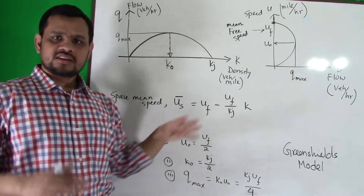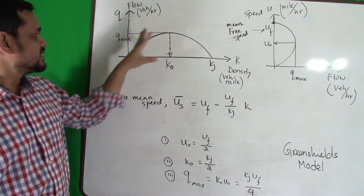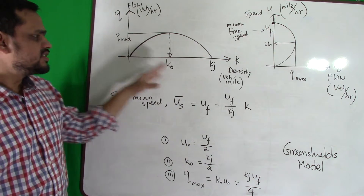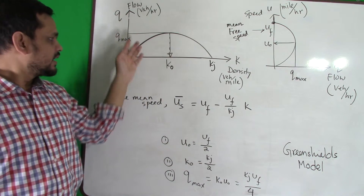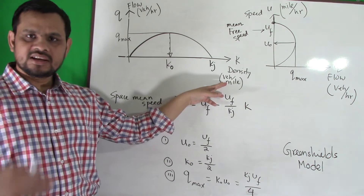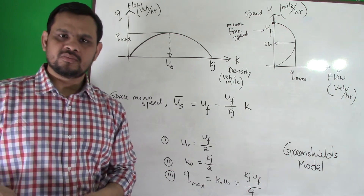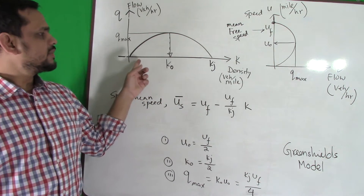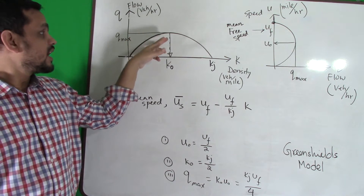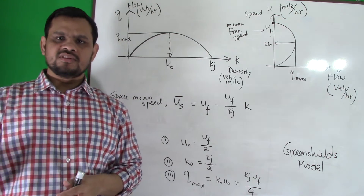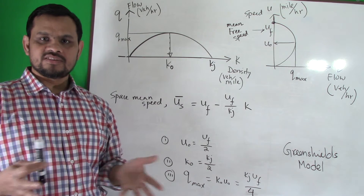In flow versus density, the typical relationship on our highway is: when density is zero, there are no vehicles on the road and no flow. If the number of vehicles increases, flow increases — more traffic means more output. So as density increases, flow increases at the beginning. After some time, so much traffic is coming into the road that flow will decrease — there will be a traffic jam.